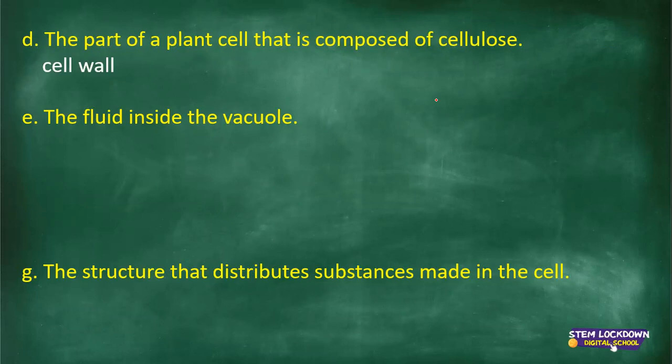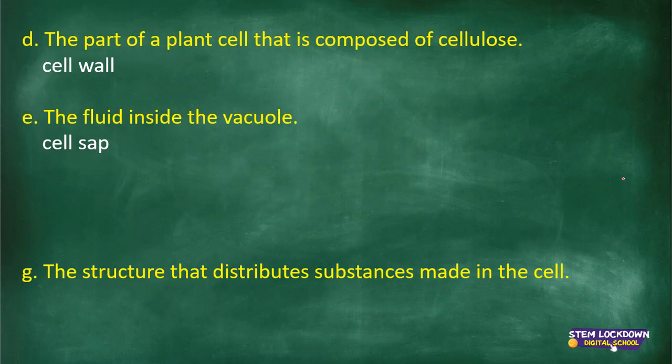The fluid inside the vacuole is called cell sap. The structure that distributes substances made in the cell — we discussed this right after we discussed Golgi bodies. If you're not going to give me an answer then I'll give you all the answers.